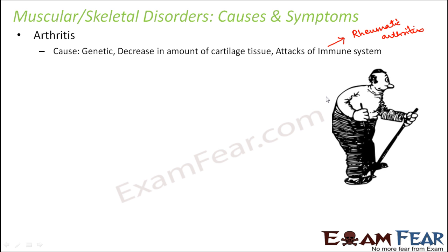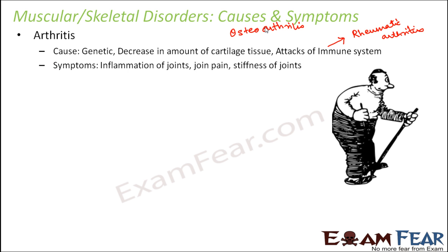Another type of arthritis is called osteoarthritis, where the amount of cartilage tissue decreases. The symptoms of arthritis include inflammation of joints — the joints get swollen up — there is severe joint pain, and joints also tend to become stiff and hard.